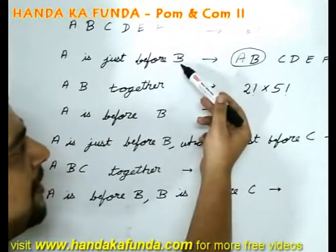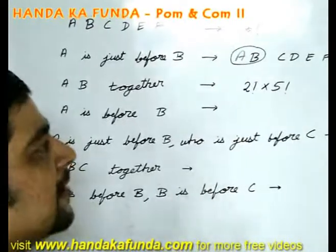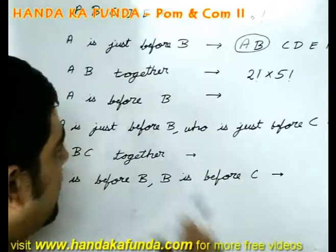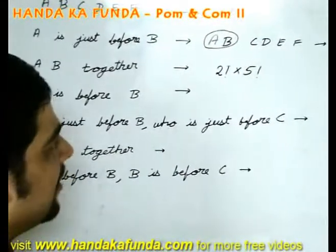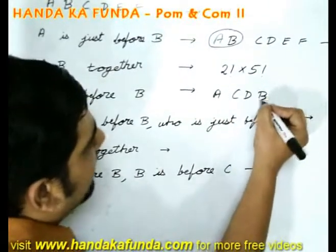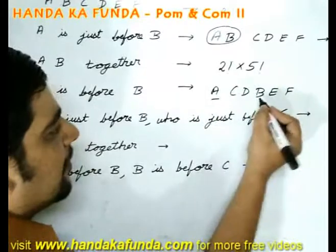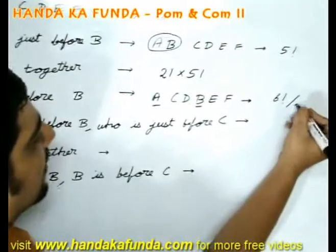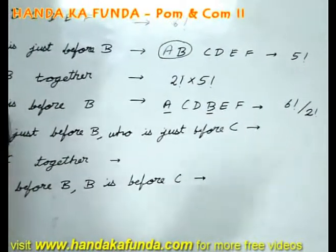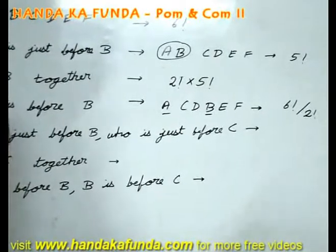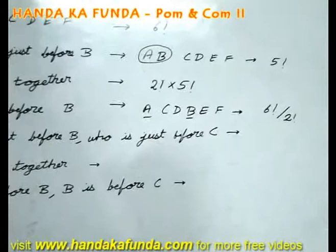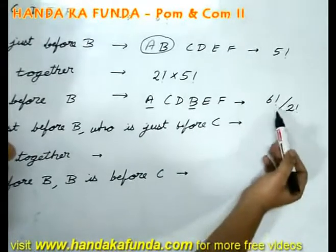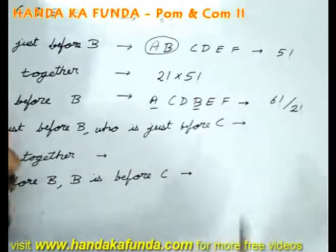A and B can be B, A as well. In how many ways is A before B? The distinction is: if A is just before B, you can consider AB as one entity. But if A is before B (not necessarily adjacent), you cannot do that — A could be at position 1 and B at position 4, for example. This is given by 6 factorial divided by 2 factorial, because in half of the arrangements A is before B and in the other half B is before A.